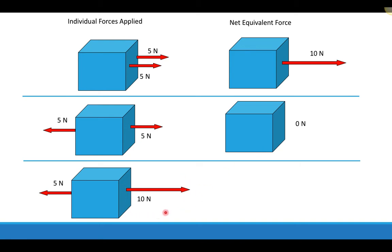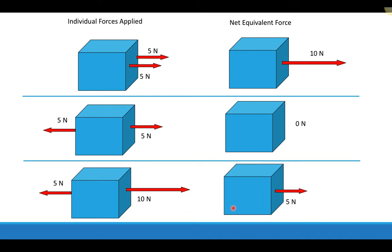With ten newtons to the right and five newtons to the left, the block should move to the right, equivalent to a total of five newtons. The ten newtons is positive and the five is negative; adding them gives five newtons to the right. So the equivalent force means you can take multiple forces on an object and describe them as a single force.